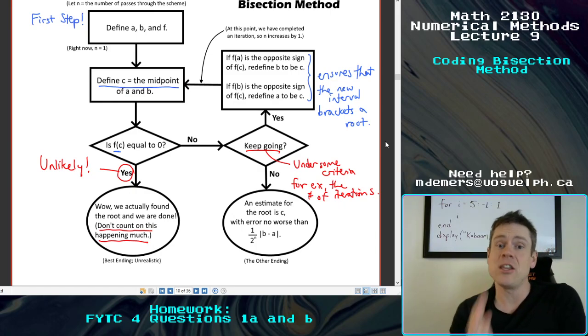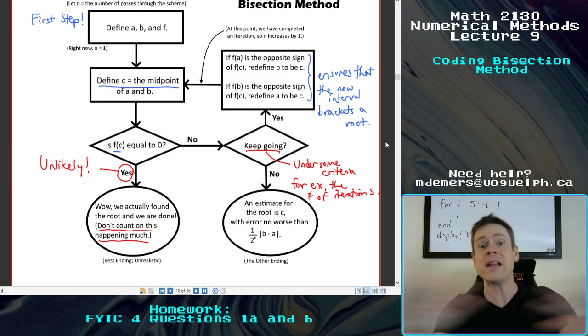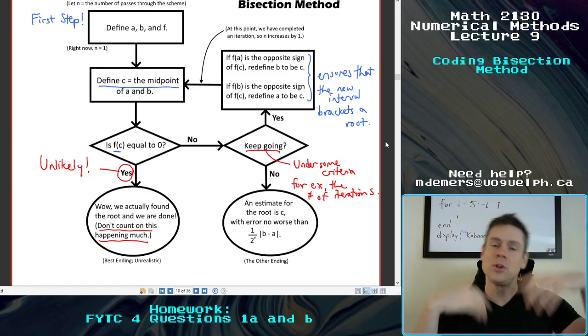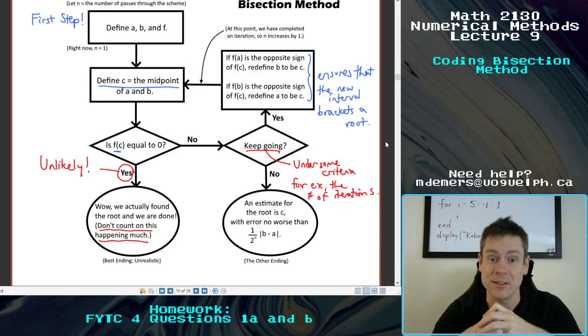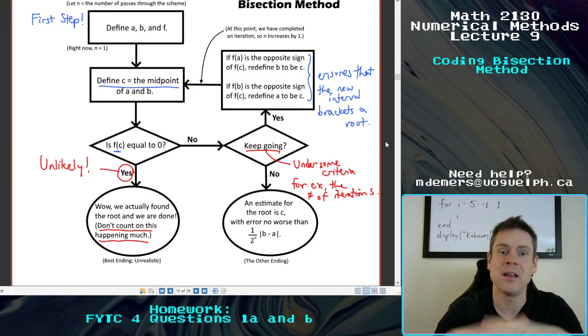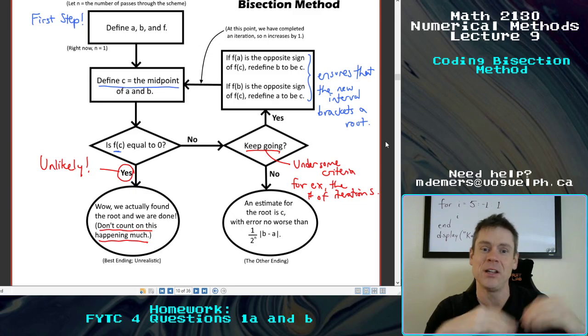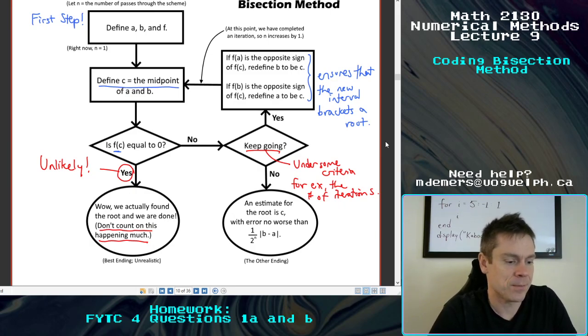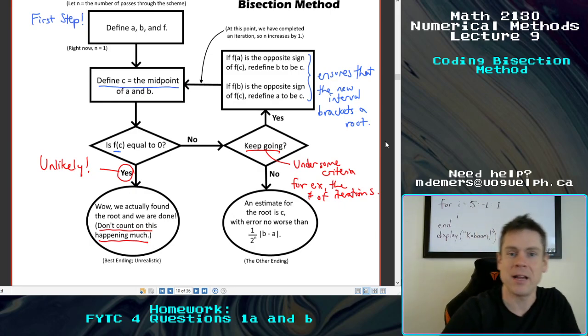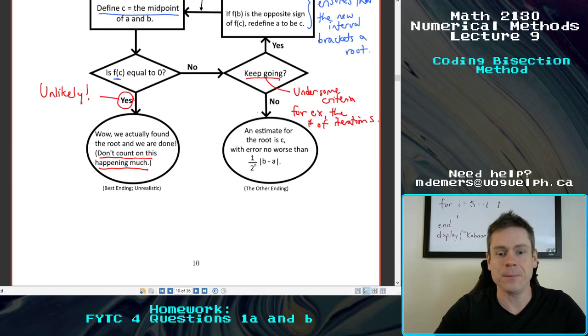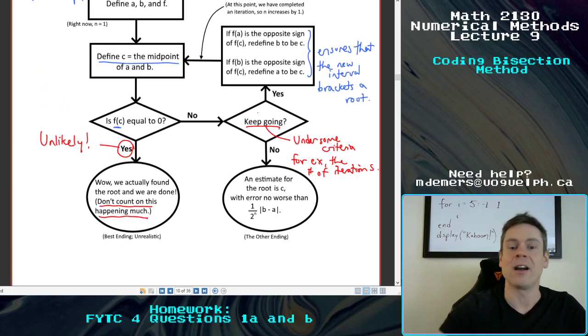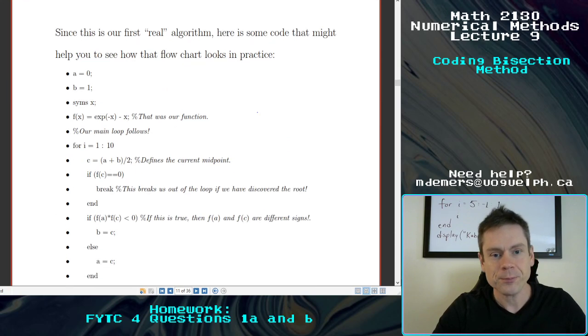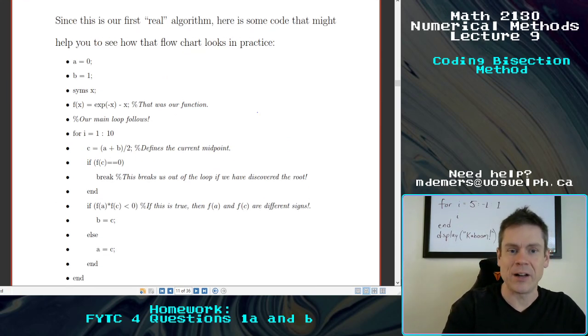One thing that you might consider doing for practice is to stop right here, go to MATLAB, try to program something that does this. And then once you've done that, you might consider looking at my source code, which we're going to go through next and see how it compares. It's really kind of powerful to be able to put together something like this. I think mine takes about, I forget, 20 lines or something. And be able to come to an answer for these sorts of these functions and finding roots. It's a really cool thing to do. So let's see, at the end of the day. Oh yeah. There's a certain error. That's the error bound that we talked about from the last class. Okay. So I said, since this is our first real algorithm, here's some code that might help you see how this flowchart works in practice.